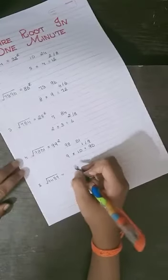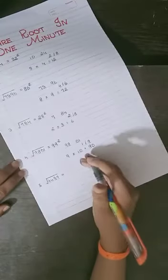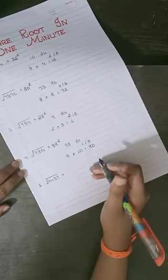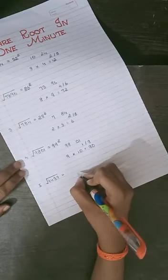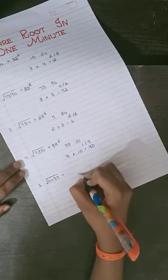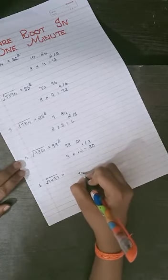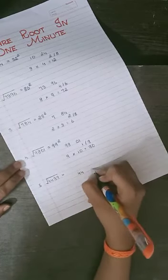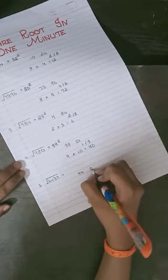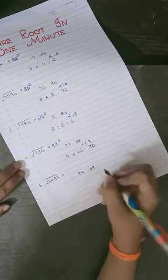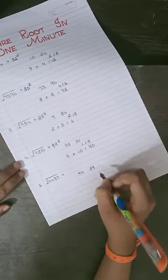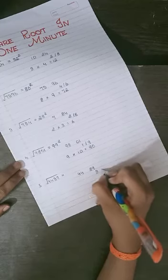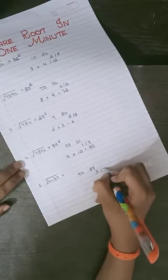The last question is 4489. We split it into 44 and 89. The unit digit is 9, so the answer will end in either 3 or 7.